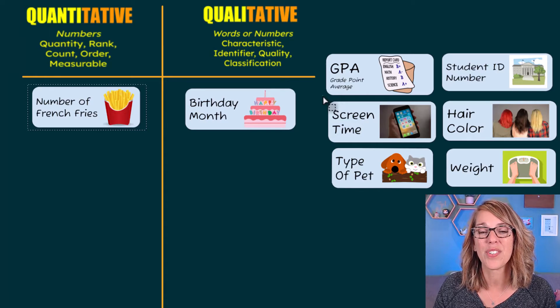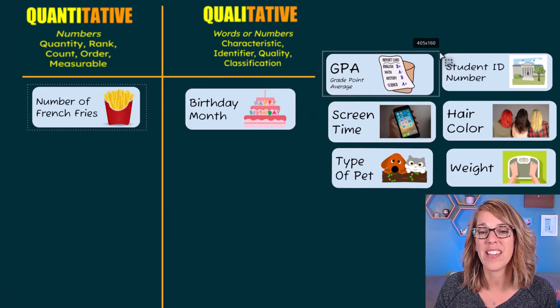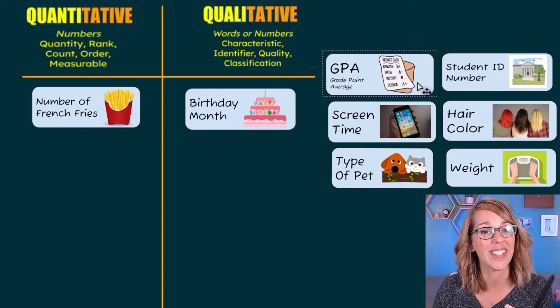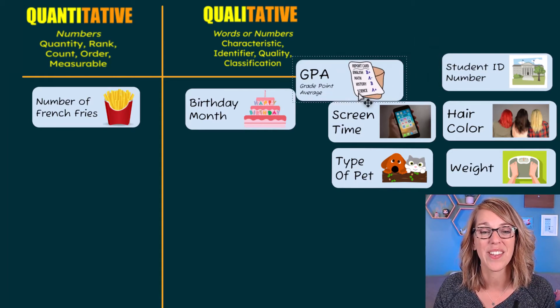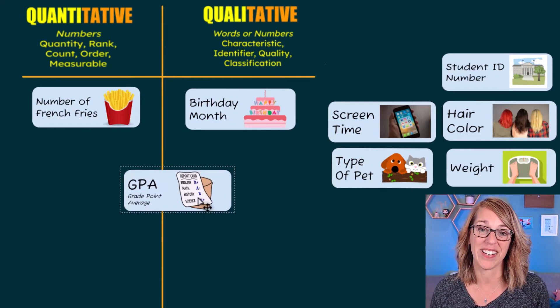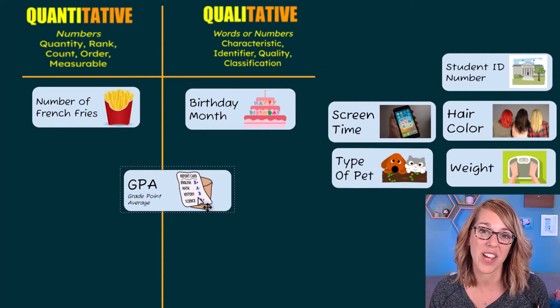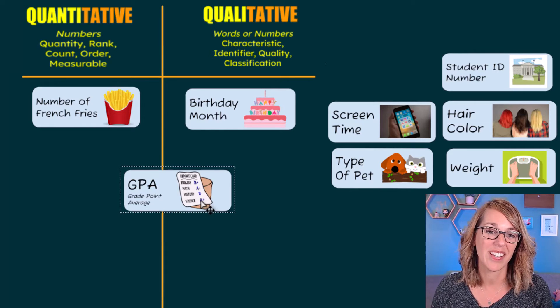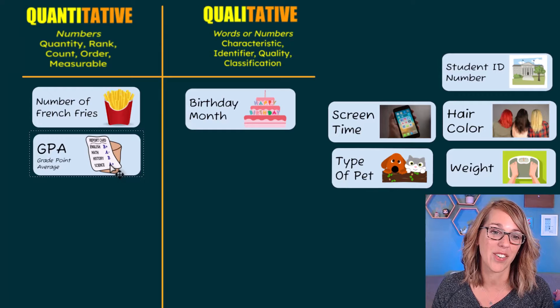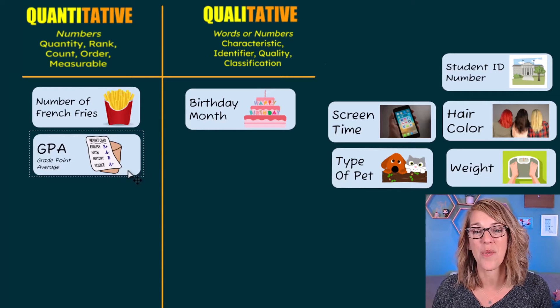Moving next over to GPA. GPA is another number. So an excellent guess would be a quantity or quantitative, but we can think of that GPA as a measurement. So that GPA or grade point average gives us a value that represents the grades you're getting. So I'm going to put that under quantitative for a quantity.